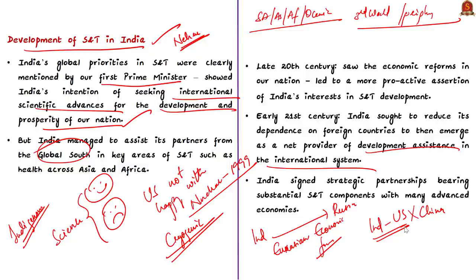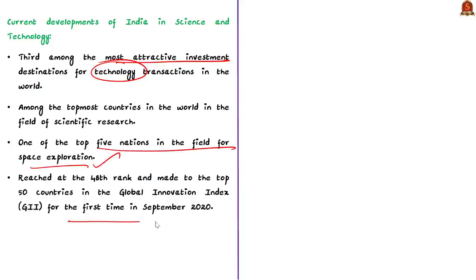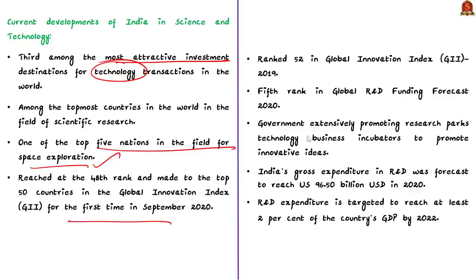Currently, India ranks third among the most attractive investment destinations for technology transactions globally, and is among the top countries in scientific research and top five nations in space exploration. Last year India moved four places to reach 48th rank in the Global Innovation Index for the first time, and moved up to fifth rank in the Global R&D Funding Forecast of 2020. The government is promoting research parks and technology business incubators to promote innovative ideas until they become commercial ventures. R&D expenditure in India is expected to reach at least 2% by 2022, and the government announced the largest ever allocation of Rs. 6000 crores to the Ministry of Science and Technology in the Union Budget.